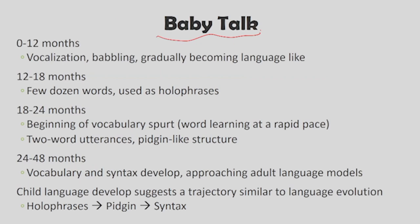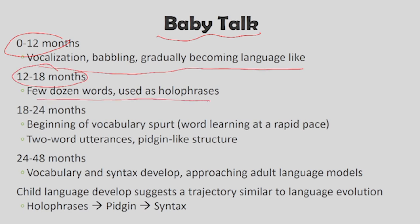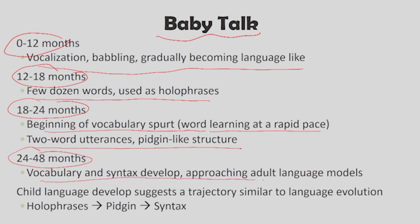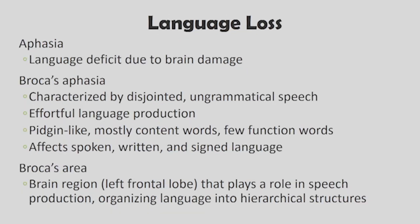Let us look at how babies develop language. From 0 to 12 months: vocalization and babbling gradually become language-like. By 12 to 18 months, most babies can produce a few dozen words, generally holophrases — complete phrases. By 18 to 24 months, there is a vocabulary spurt with word learning at a rapid pace and two-word utterances showing pidgin-like structure. By 24 to 48 months, vocabulary and syntax develop approaching an adult language model. Children's language development suggests a trajectory similar to language evolution: holophrases leading to pidgin leading to syntax — first learning hollow phrases, then basic sentences, then full syntax like 'mother will drink' or 'I will drink water.'